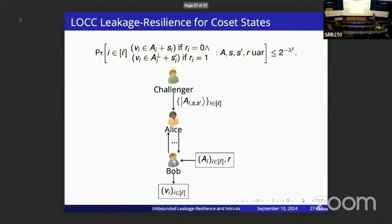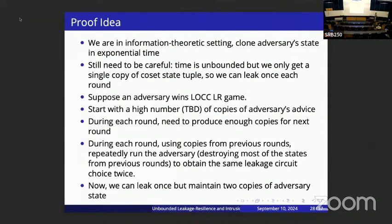The proof idea for this new property is as follows. One of the challenges in obtaining leakage resilience from copy protection type security is that we can't clone the leakage resilience adversary's state. But in this information-theoretic setting, we can try to clone the leakage resilience adversary's state in exponential time. We still need to be careful because even with exponential time, we have only a single copy of the state being leaked on. If we naively run the adversary in parallel twice, they're likely to specify different measurement circuits each round, and we can only apply our leakage measurement once.